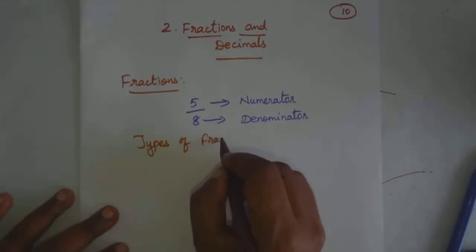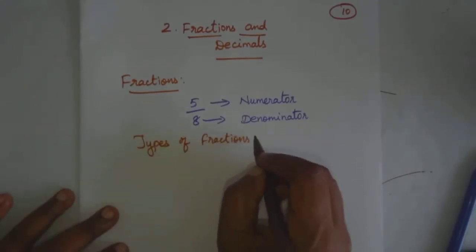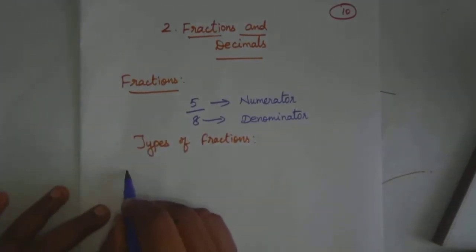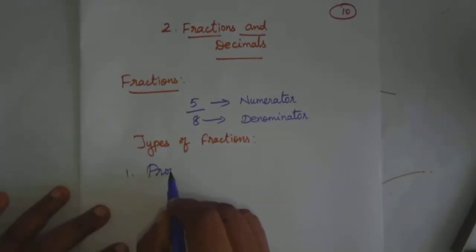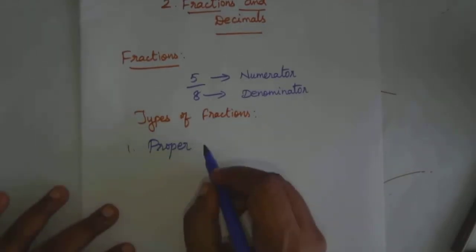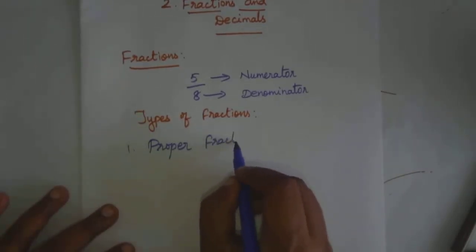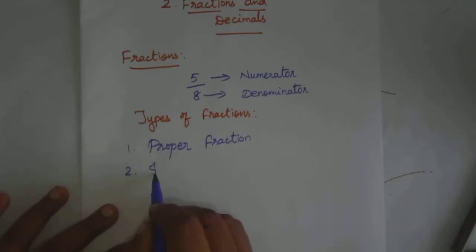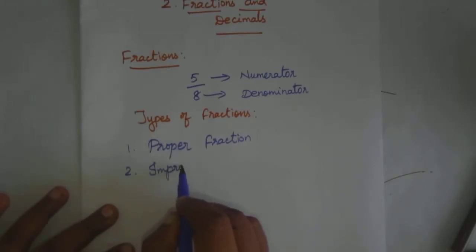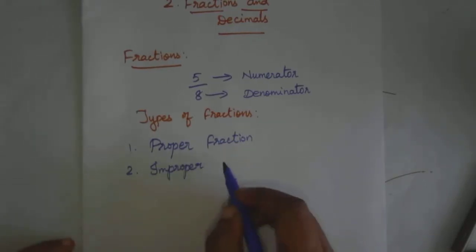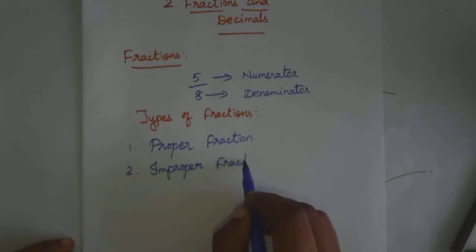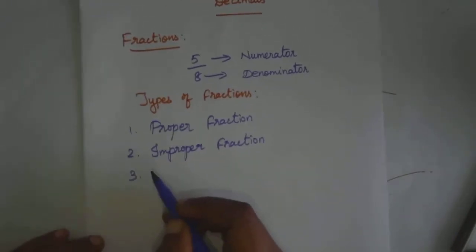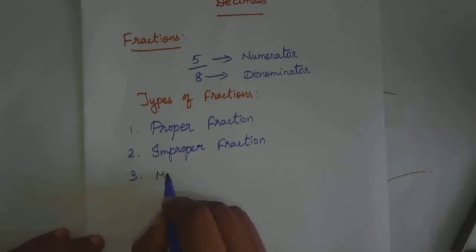What are the types of fractions? Any number in the form of numerator and denominator is called a fraction. So what are the types of fractions? One is proper fraction. Improper fraction. Third one, mixed fraction.